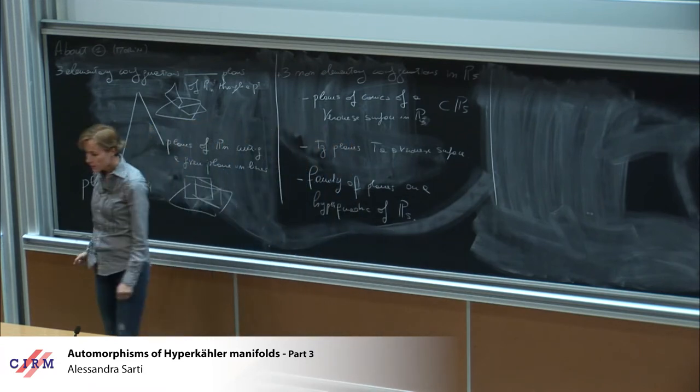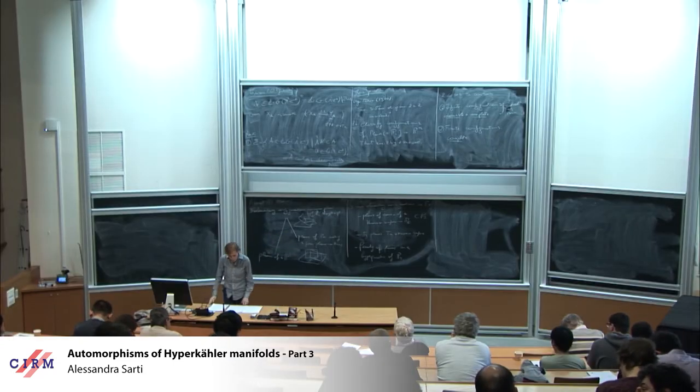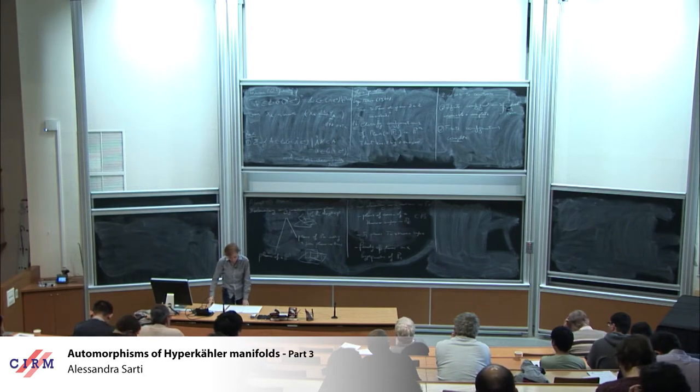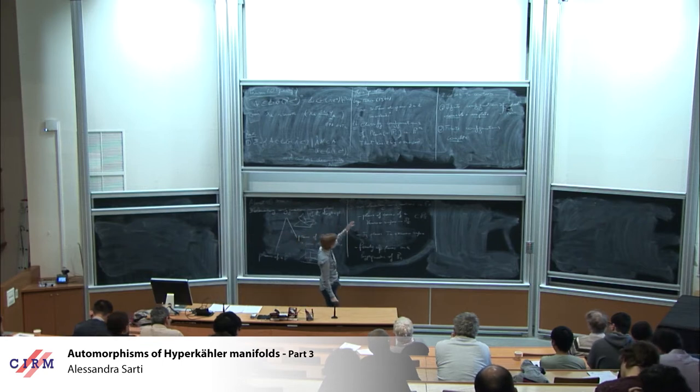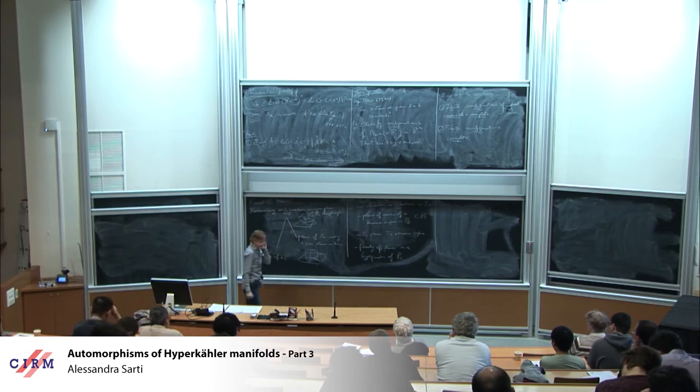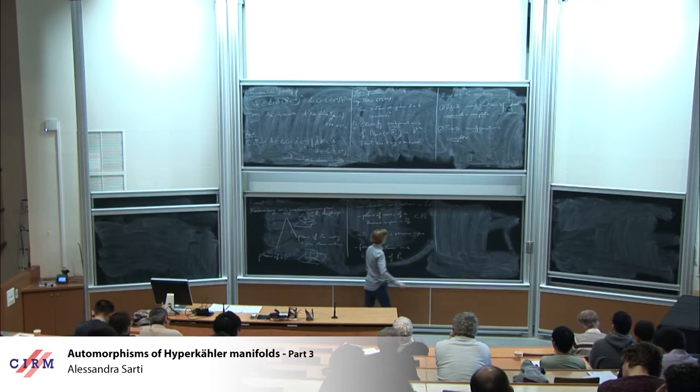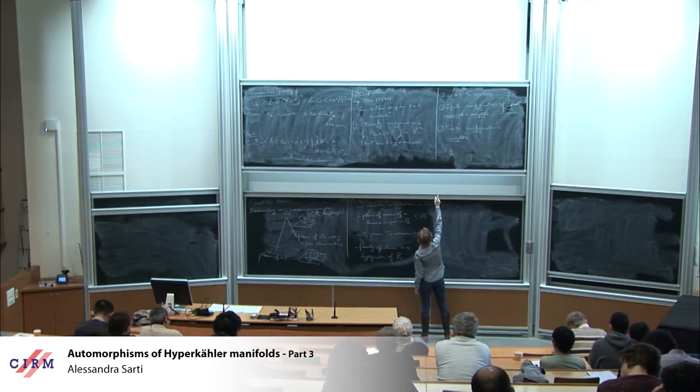So the three ones are the planes of conics of a Veronese surface in P4, and then tangent planes always to a Veronese surface, and then there are the family of planes on a hyperquadric of P5. And one can show that, in fact, these are all complete families of planes, two by two incident.